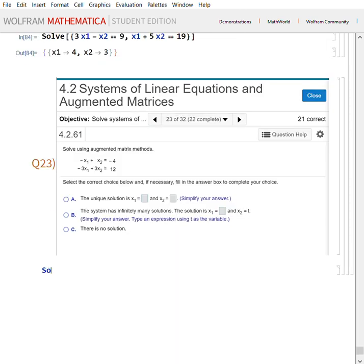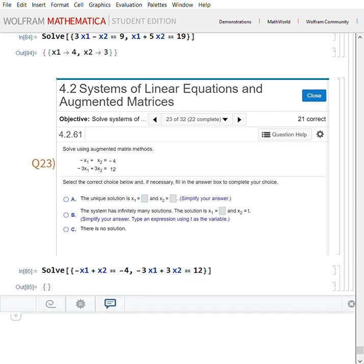Maybe this would be our last one, Q23. So solve the bracket with the bracket. Minus x1 plus x2 equals minus 4, comma, minus 3x1 plus 3x2 equals 12. Square brackets, bigger bracket, Shift+Enter. And as you see, there's no solution.